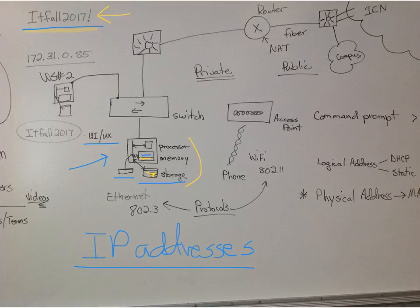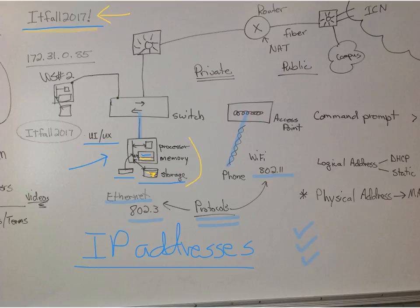We talked about our communications to the switch — Ethernet, 802.3. And we talked about communications to an access point — Wi-Fi, 802.11. Those are protocols. We're going to mention protocols every day, and we'll talk about different ones that do different things that allow us to communicate to other computers.